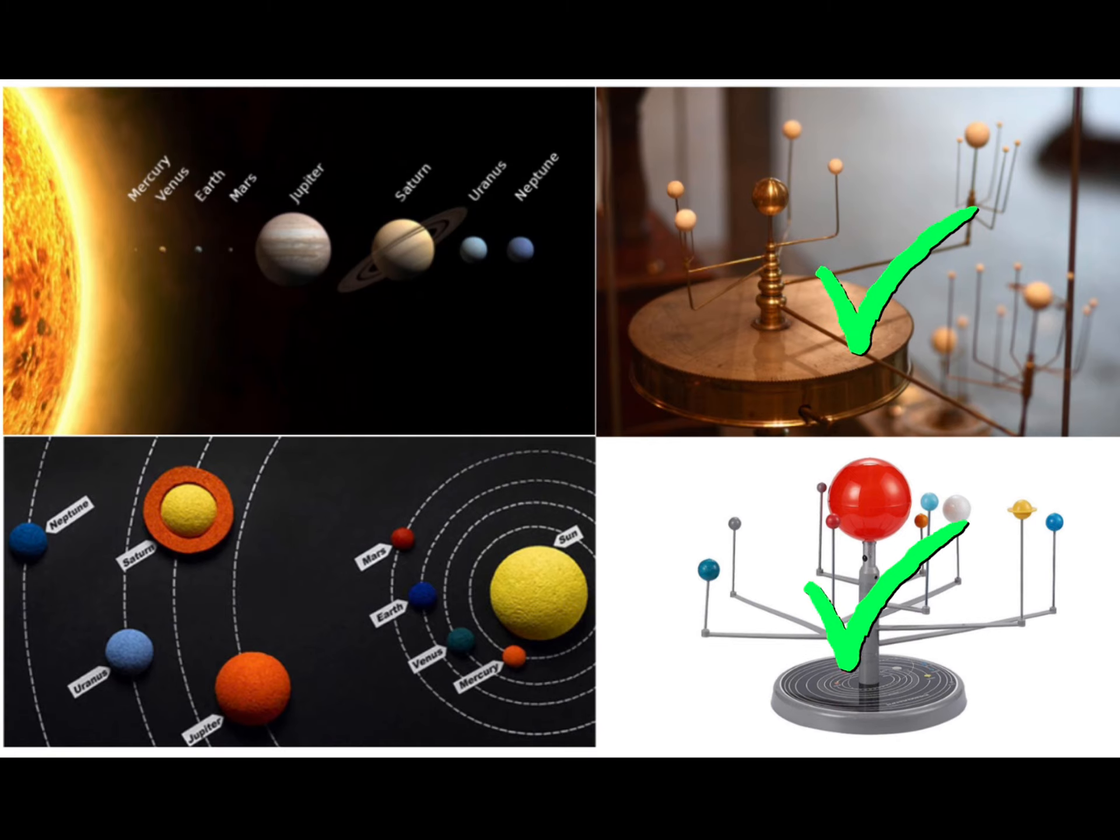The last two models are more for decoration, and you may find them in a classroom or a museum. They're very useful to show the orbital motion of the planets as they go around the sun.